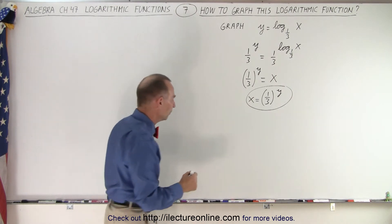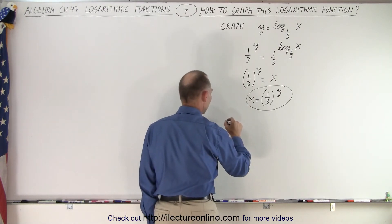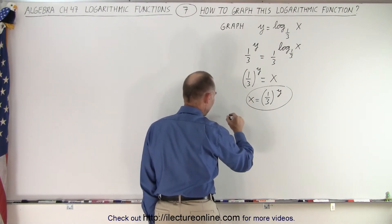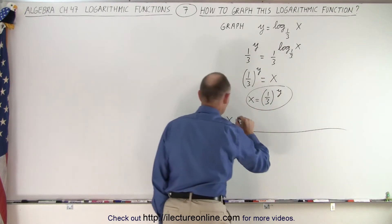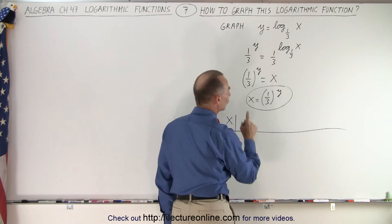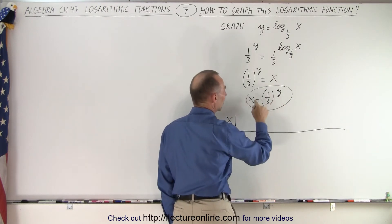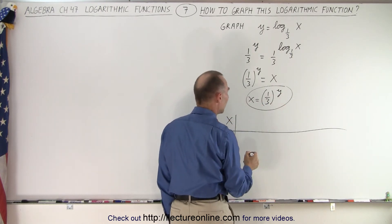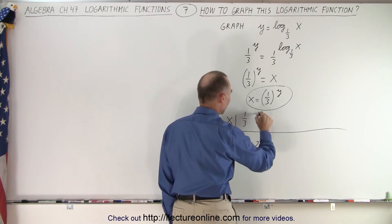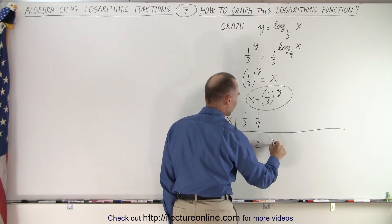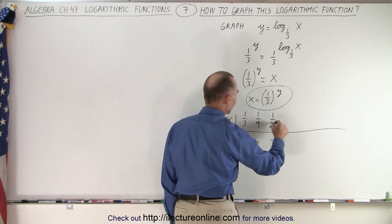Now you want to set up a table. So you put in some x values and some y values. It looks like it may be easier to put in different y values to see what x values you get. For example, when y is equal to 1, you get 1/3. If y is equal to 2, you get 1/9. And if y is equal to 3, you get 1/27.